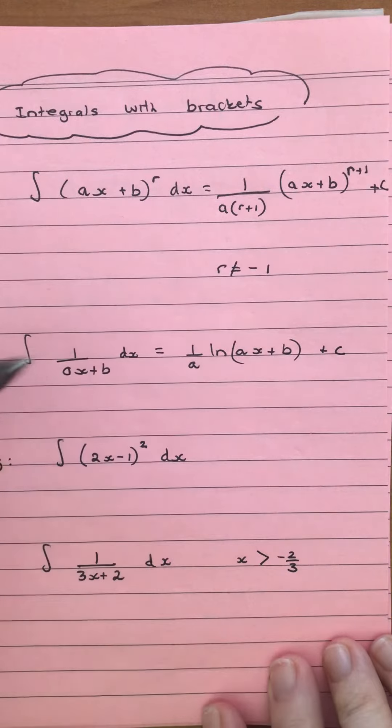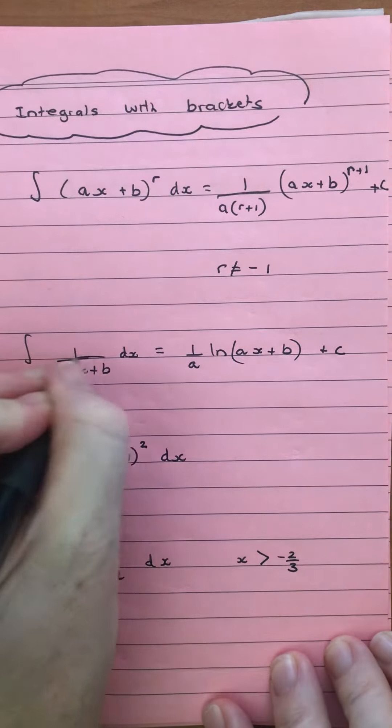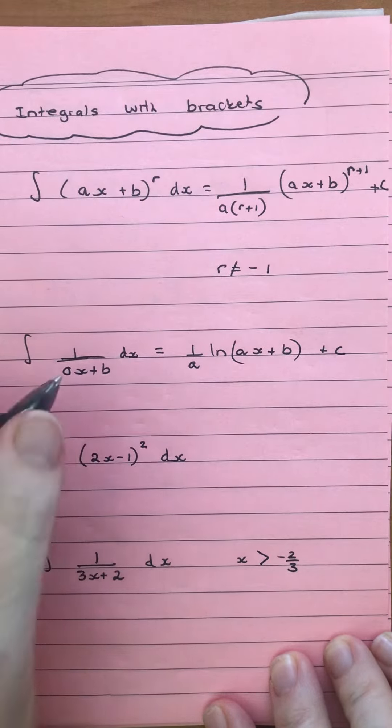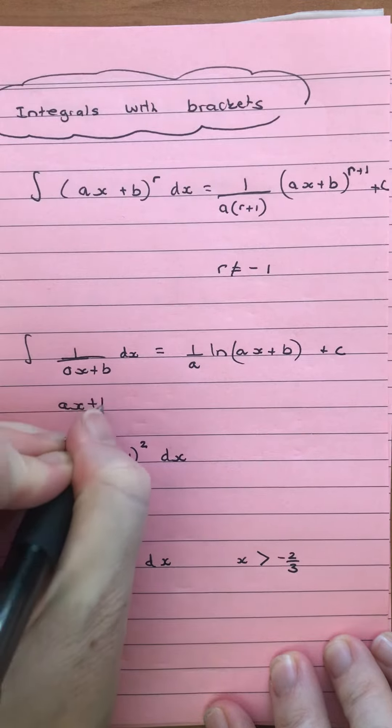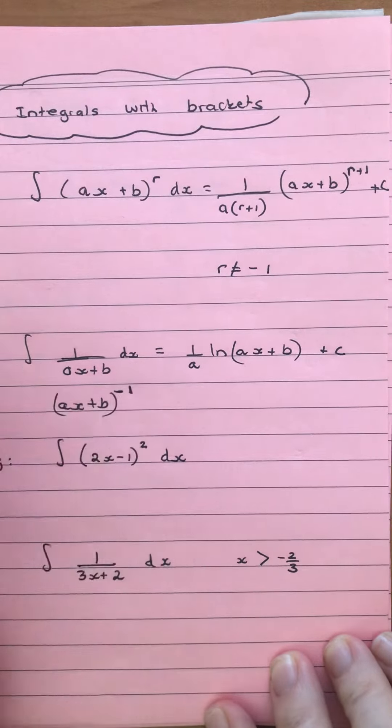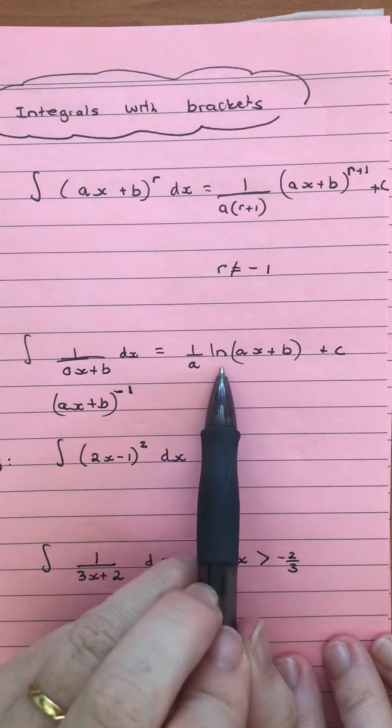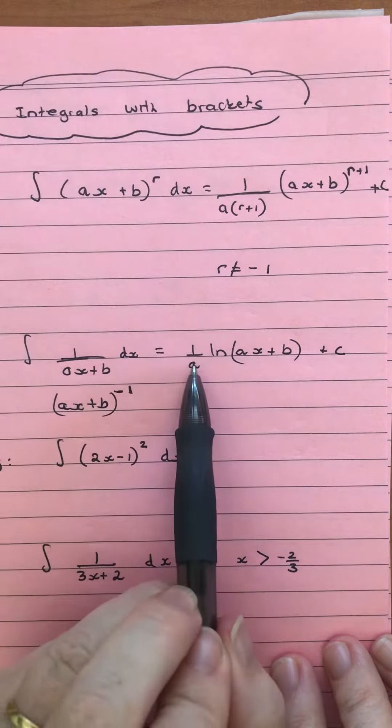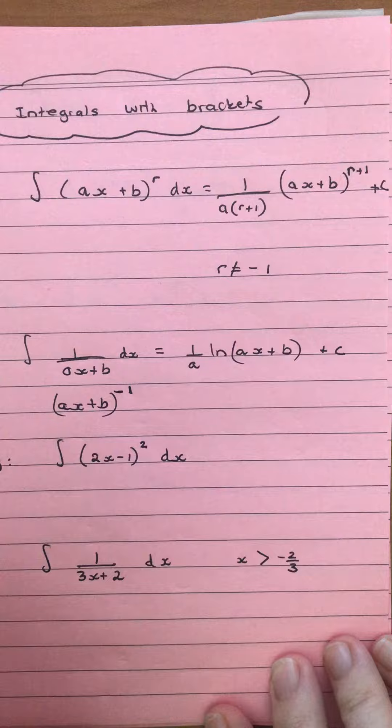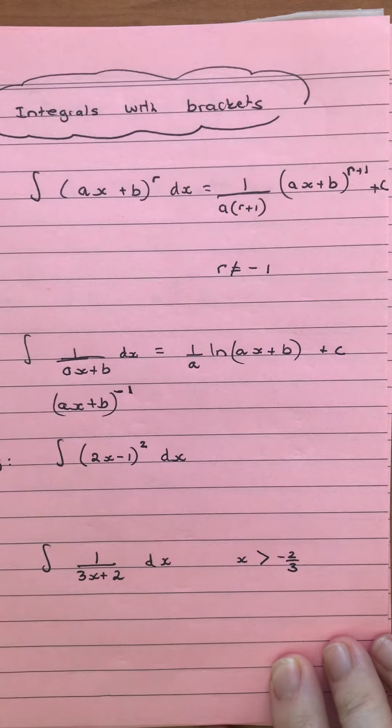That's what the next rule is, where we have r equals negative 1. See how 1 over (ax+b) is the same as writing (ax+b) to the negative 1. When we've got that, that's where we're going to use our natural log. We have 1 over a times ln(ax+b) as our integral.